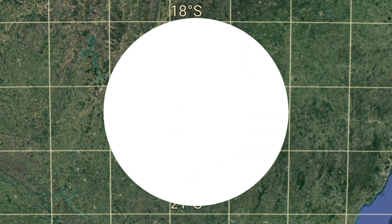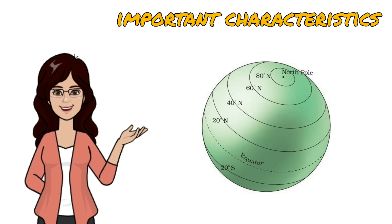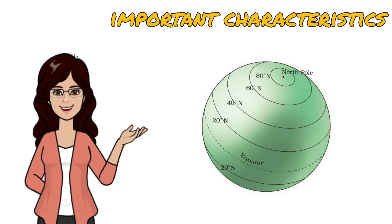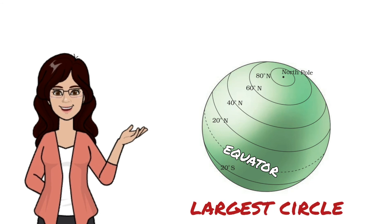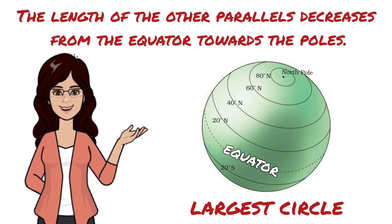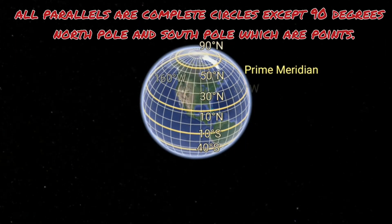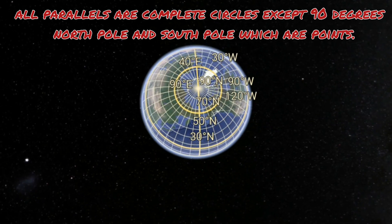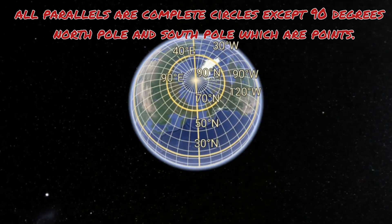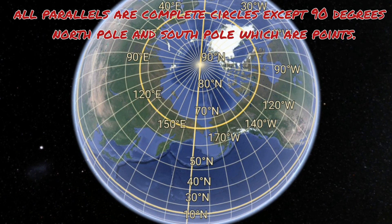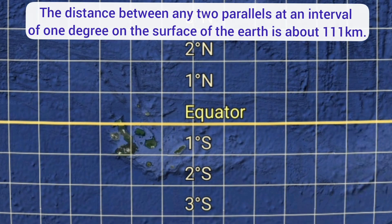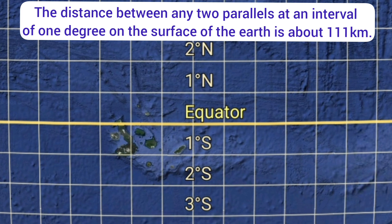Now let us know the important characteristics of parallels. First, the equator is the largest circle; the length of the other parallels decreases as we move away from the equator on either side towards the poles. Second, all parallels are complete circles except 90 degrees north pole and south pole, which are points. Third, the distance between any two parallels at an interval of 1 degree on the surface of the earth is about 111 kilometers.